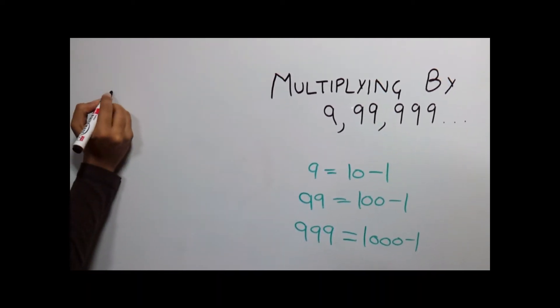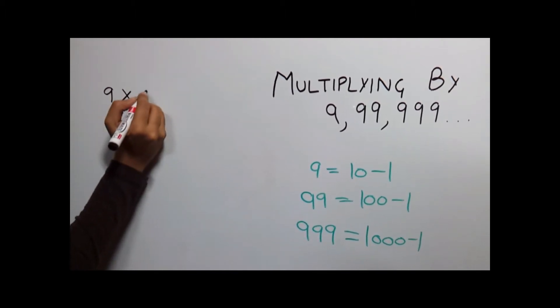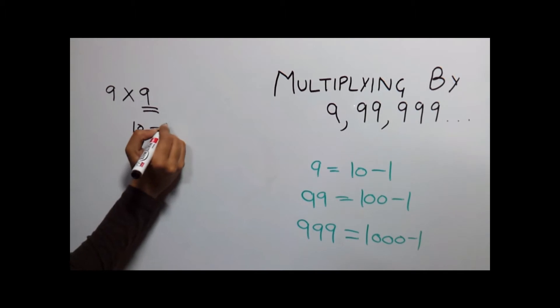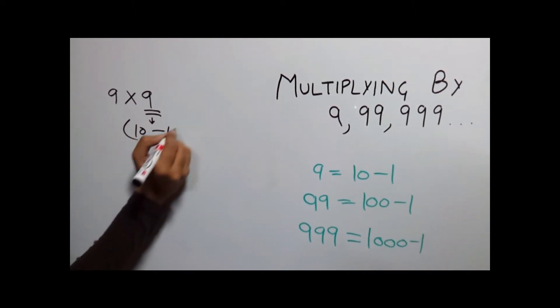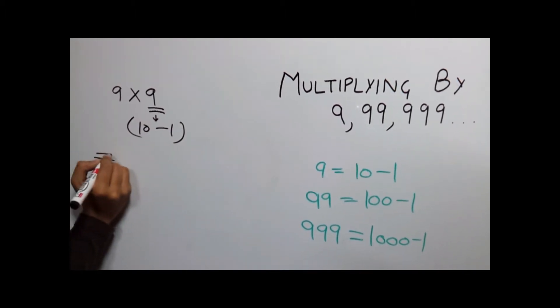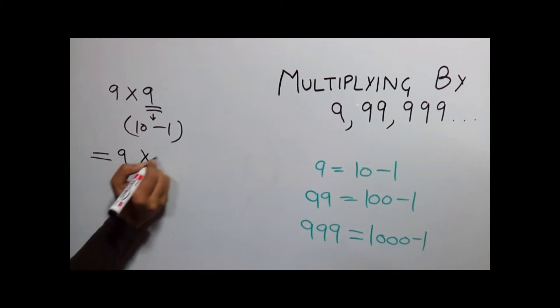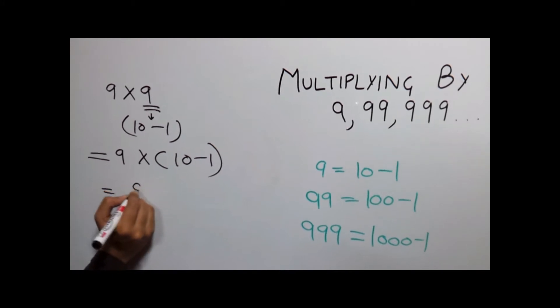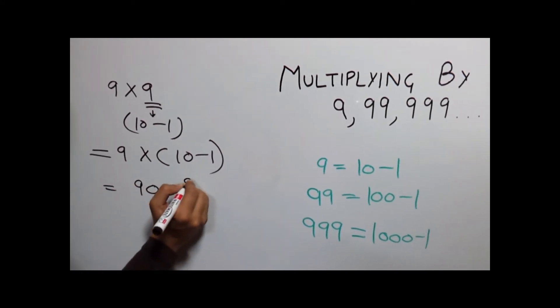Let's multiply 9 by 9. Now this 9 can be written as 10-1. So our problem becomes 9 into 10-1 which becomes 90-9.